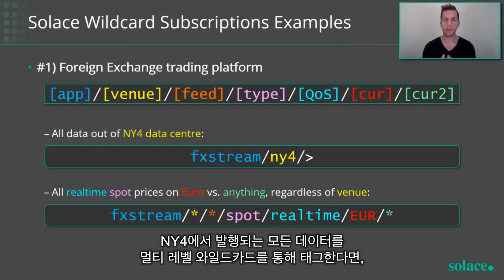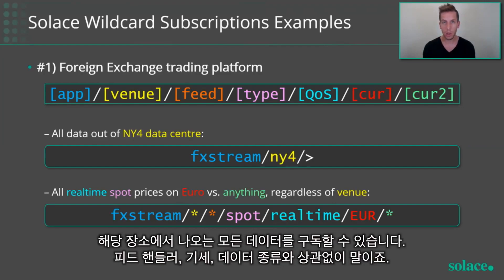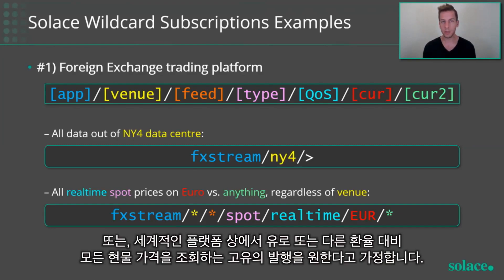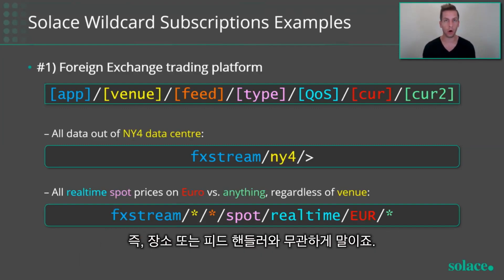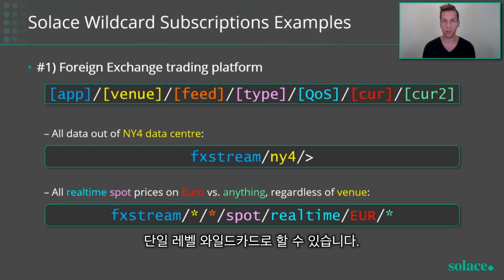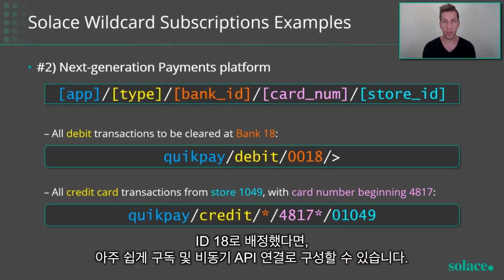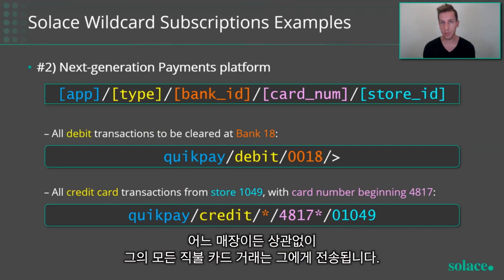Going back to our use cases — our FX trading platform. Say all data published out of NY4 is tagged that way. With a multi-level wildcard, you could subscribe to all data coming out of that venue, regardless of feed handler or quote type — maybe to funnel that into a regulatory database. Or you could do a very unique subscription listening to all spot quotes in a real-time feed for euros against any currency across your whole global platform, regardless of venue and feed handler, using the single-level wildcard. For the payments platform, if a new bank joins with ID number 18, you can easily configure a subscription so all debit card transactions destined for that bank get sent to them regardless of which store they're coming from.